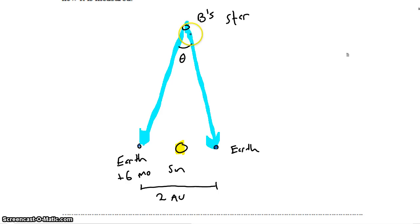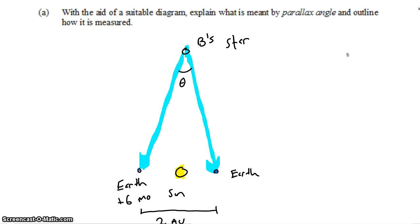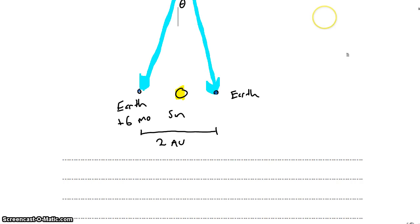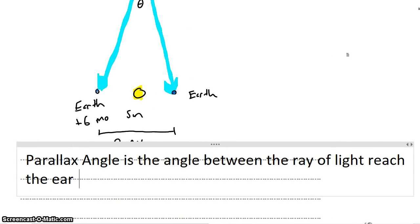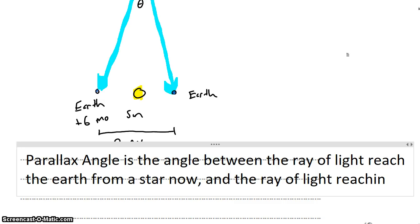This angle is the angle between the ray of light reaching the Earth from Barnard's star now, and the ray of light reaching the Earth from Barnard's star six months from now. So what is meant by the parallax angle? The parallax angle is the angle between the ray of light reaching the Earth from a star now, and the ray of light reaching the Earth from a star six months from now.